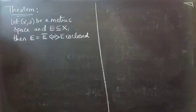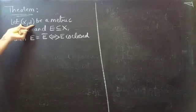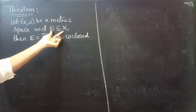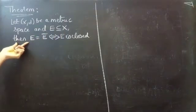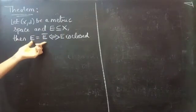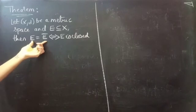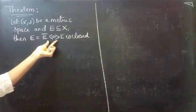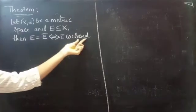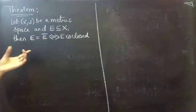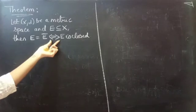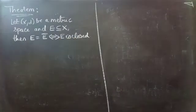So here is the statement. Let (X, d) be a metric space and E is a subset of X. Then we have to prove that E equals E-bar if and only if E is closed. So, what we have to prove here? E equals E-bar if and only if E is closed.